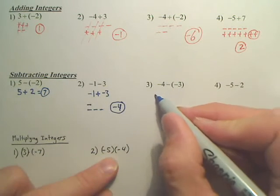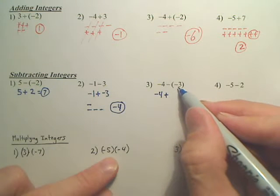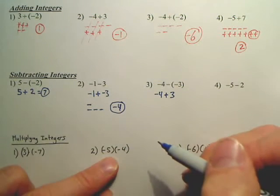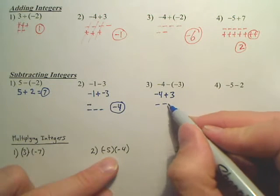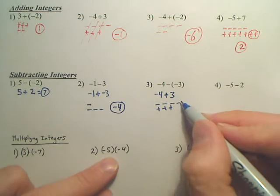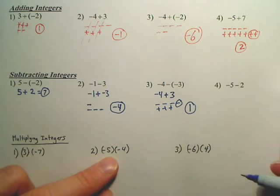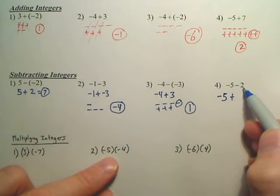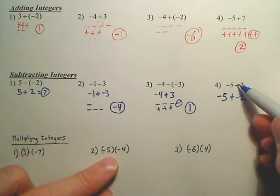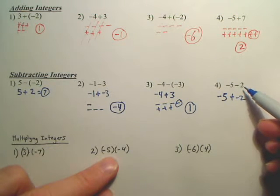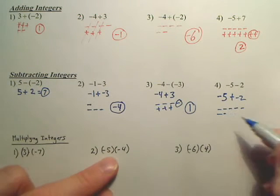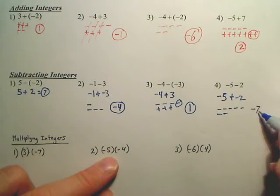This one: that's going to be negative four plus what? What's the opposite of negative three? Positive three. The minus becomes a plus, and you change whatever that is. Who's going to win? The bad guys — because how many more do they have? One. And the last one: that's negative five plus two or negative two? Basically, you change that to a plus, and then that positive two becomes a negative two. That's negative five and negative two — so seven negatives.